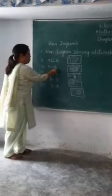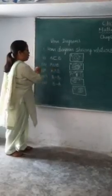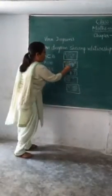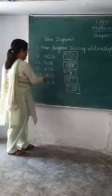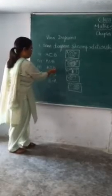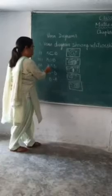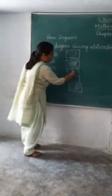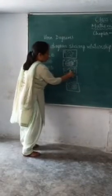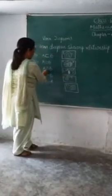A union B means all the elements which belong to either A or B or both. So all elements given in A and B belong to A union B. The third one is A intersection B. In A intersection B, only the common elements — the elements which belong to both A and B — are included. This is the portion of the circles which belongs to A and also to B. This is the Venn diagram of A intersection B.